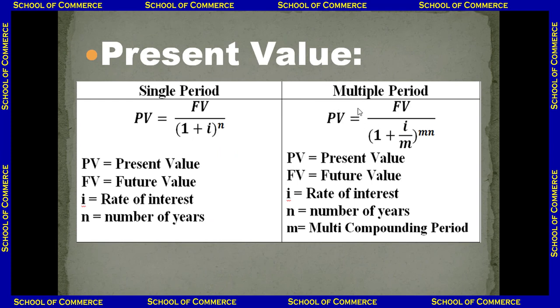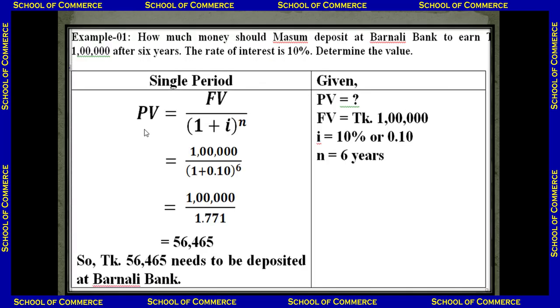We will discuss multiple period a bit later. First, for single period, we already know the formula: present value is equal to FV divided by (1 + i) to the power of n. Let's have some mathematical problems and solutions for single period.